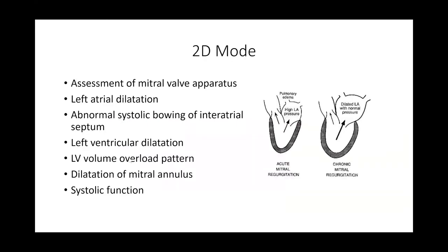For the echocardiographic assessment, in 2D mode there are three important things to assess. First, the mitral valve apparatus itself, to understand the mechanism and etiology causing the MR. Second, the systolic function of the left ventricle, which is very important to measure for understanding the hemodynamic effects of MR. Third, the effect of MR itself on the chambers.